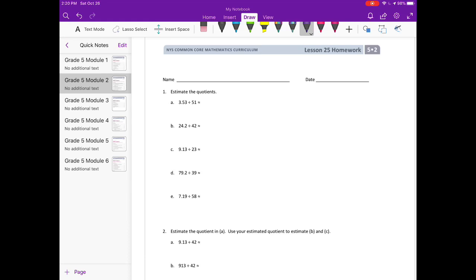3.53 divided by 51. We're going to think about our math facts and turn these numbers into something we can divide easily. In A, I see 35 and 5, and I can do 35 divided by 5. So I'm going to make this 350 divided by 50. To make that 350, I had to multiply by 100 and round.